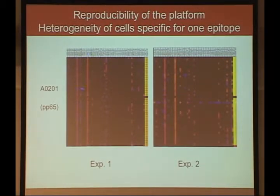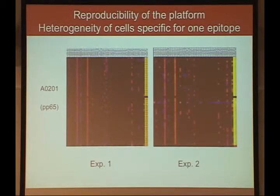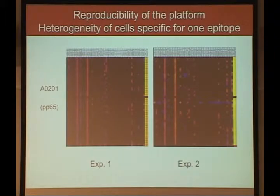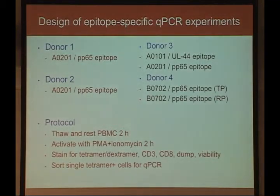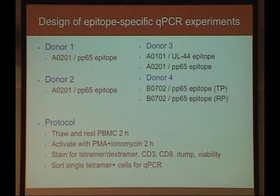There are a couple of genes always amplified in these tetramer-positive cells, and others showing heterogeneity where some cells are positive and some negative. That pattern is highly reproducible between the two experiments. These cells were sorted using a tetramer for the CMV PP65 protein epitope restricted by HLA-A2.